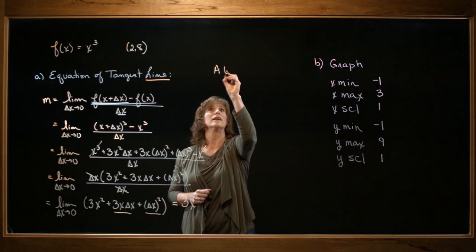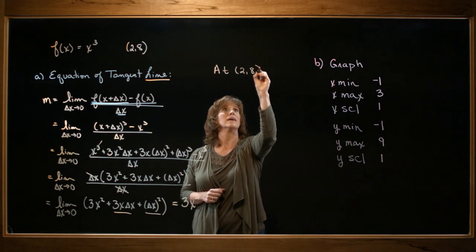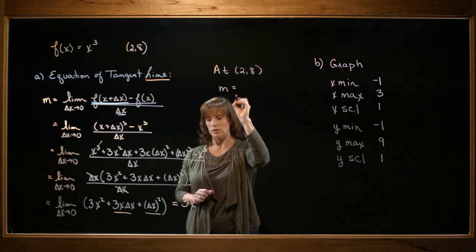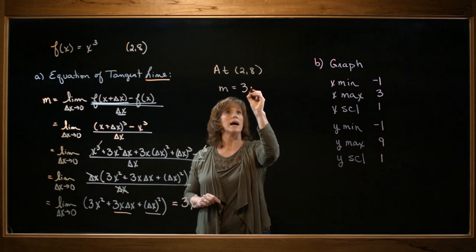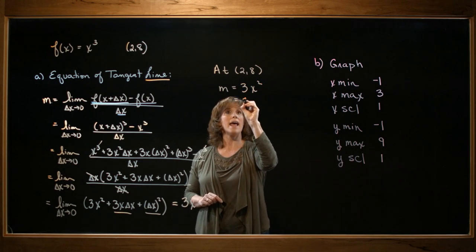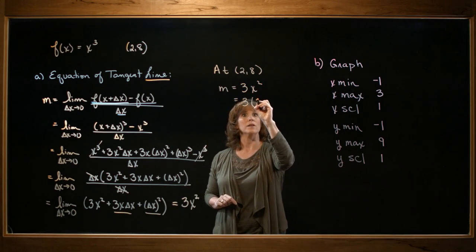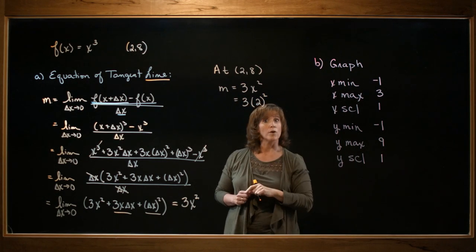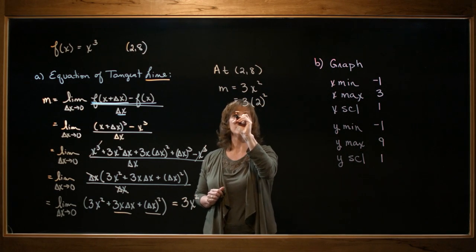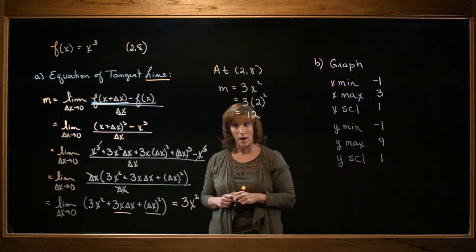So at the point (2,8), my slope is going to be 3 times x squared and x is going to be 2. 2 squared is 4 times 3 gives me a slope of 12.